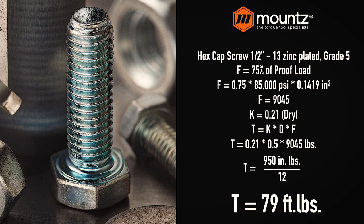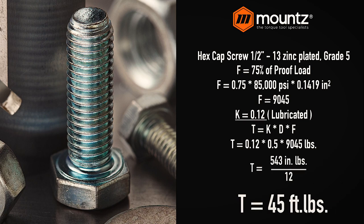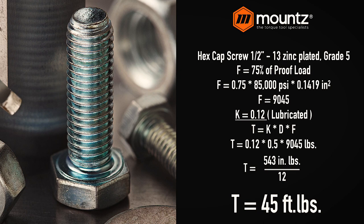If we do the same exercise with everything else being the same, but now use a lubricated fastener, this changes our K-nut factor to 0.12 and will change our torque output as well. Multiplying this out comes to 543 inch-pounds, or roughly 45 foot-pounds. So this would be the scenario you would use if you're using a lubricated half-inch cap screw versus a dry half-inch hex cap screw.